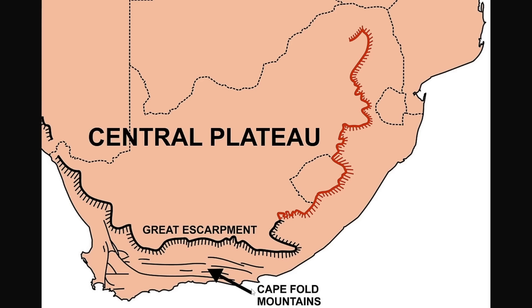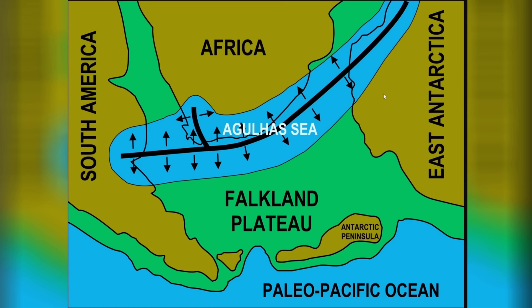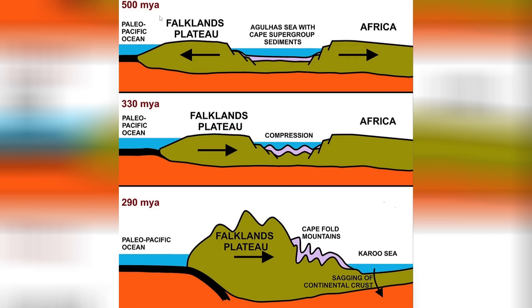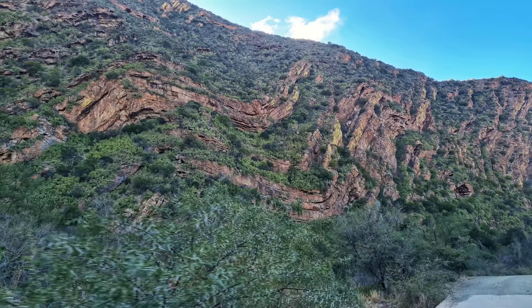The actual land of the Falklands today was created alongside the Cape Fold Mountains in South Africa. Around 510 million years ago, a major rift had broken out, separating what is known as the Falklands Plateau from Africa. This rifting area got filled with water and formed what is known as the Agulhas Sea. However, eventually the Paleo-Pacific Ocean started subducting under the Falklands Plateau and moved it back towards Africa, causing the sediments in the Agulhas Sea to rise and form the folded Cape Fold Mountains that we can see today.